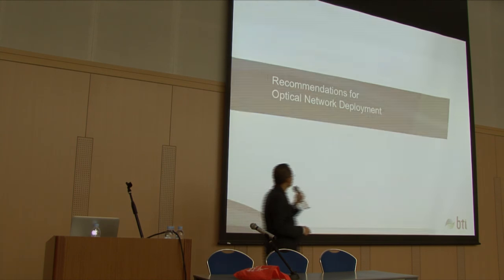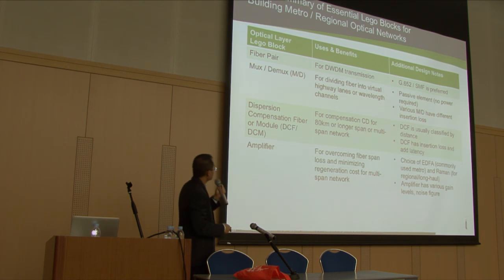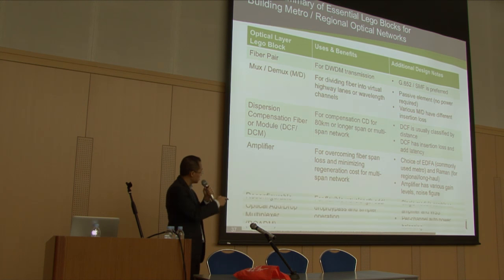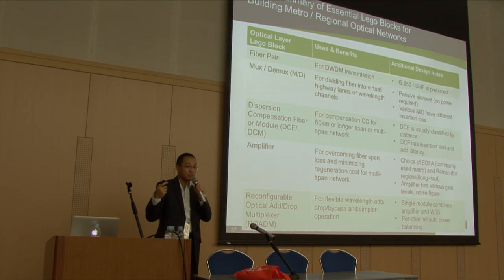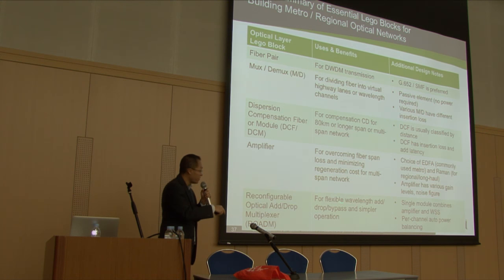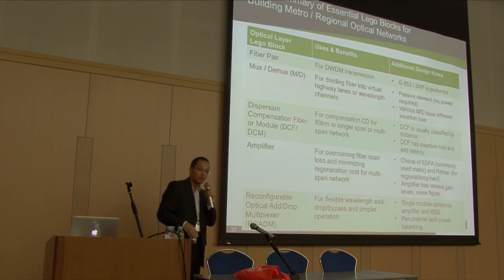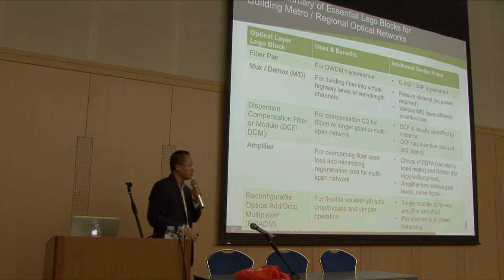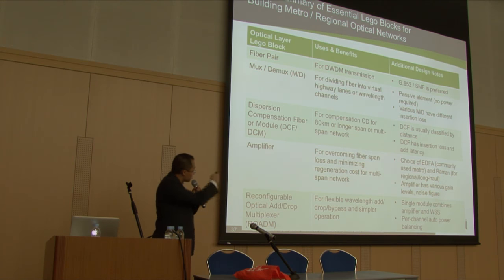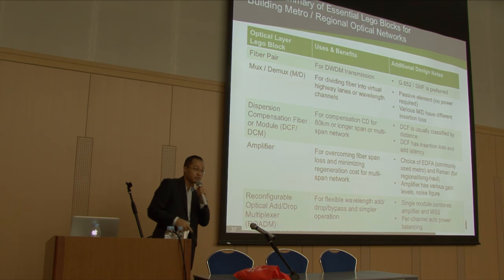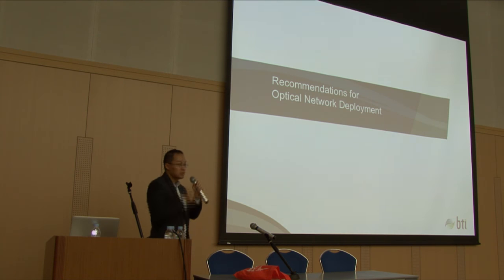ROADM is the last Lego block I want to discuss. Where ROADM is less useful is when you need to terminate traffic at every single site — then there's no point in bypassing wavelengths, and you don't need ROADM. But where you see the clear benefit is when you have a lot of pass-through traffic — it makes sense because you save all your transponders or color optics on the switches along the way. Many optical vendors offer ROADM technology today. BTI is one of them.